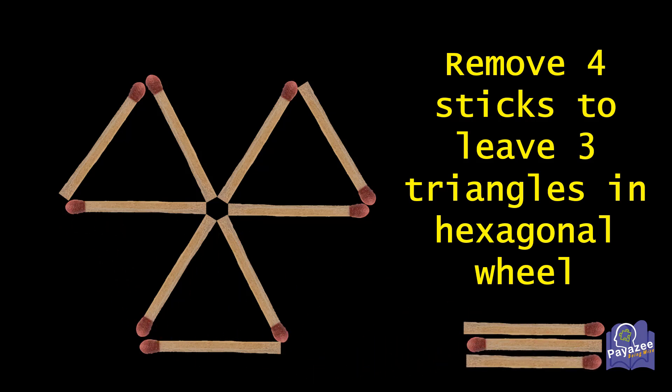So 3 match sticks are removed and we have got 3 triangles. If we move this match stick here, this will also become our 3 triangles. So 1 stick is common between these 2 triangles and this is an independent triangle.